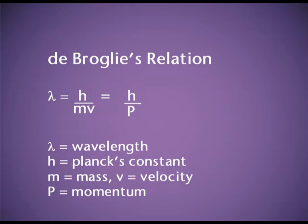Momentum equals mass times velocity, so we can also write the equation as lambda equals h divided by mv. From this relation, it is clear that wavelength is inversely proportional to mass. If the mass is higher, the wavelength will be small. So we will not be able to observe the wave character of a heavier particle. It is only observed for very small, very light particles in the range of the mass of an electron and subatomic particles.